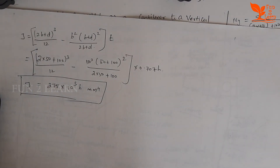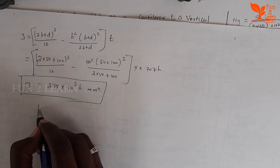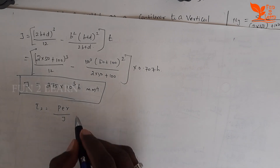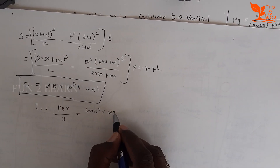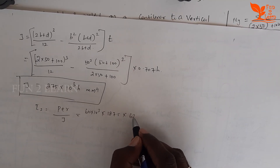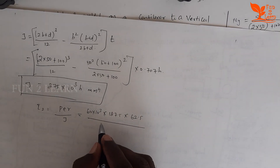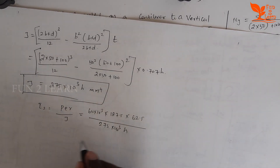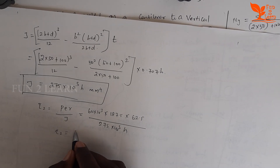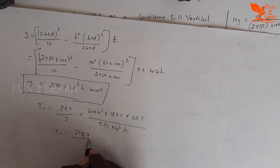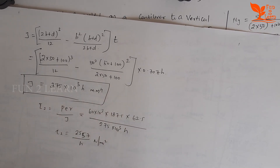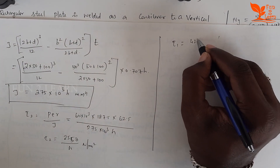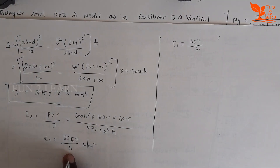Now we can calculate τ₂. Using τ₂ = P×e×R / J: P = 16×10³ N, e = 187.5mm, R = 62.5mm, J = 275×10³×H mm⁴. Substituting: τ₂ = (16×10³ × 187.5 × 62.5) / (275×10³ × H) = 255/H N/mm². So τ₁ = 424/H and τ₂ = 255/H.